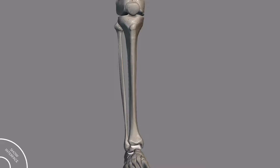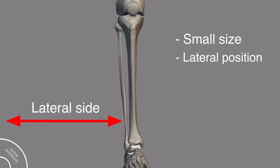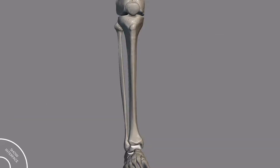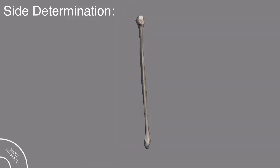In this video I will discuss the fibula bone in detail. The fibula bone is the bone of the leg. It is smaller in size and lateral in position compared with the tibia bone. The fibula bone is homologous with the ulna bone of the upper limb. Now we come to the side determination of the fibula bone.